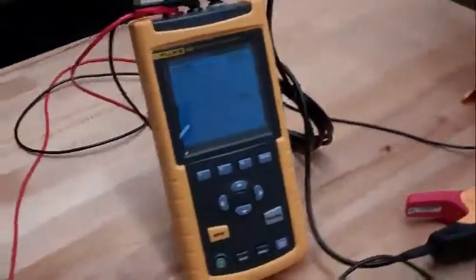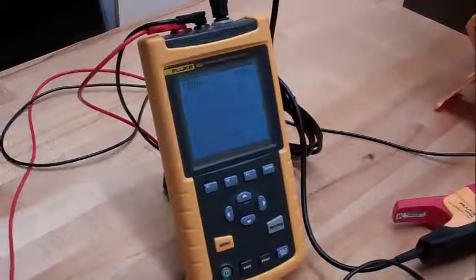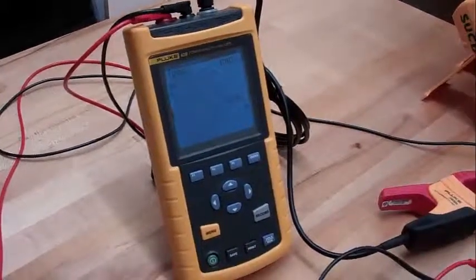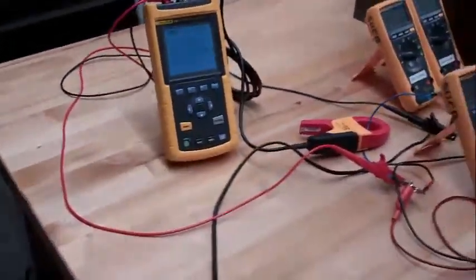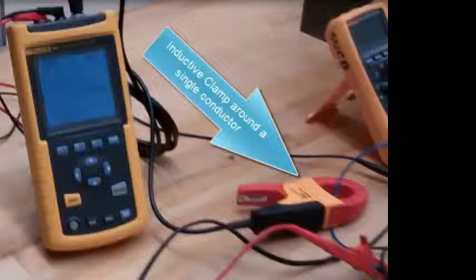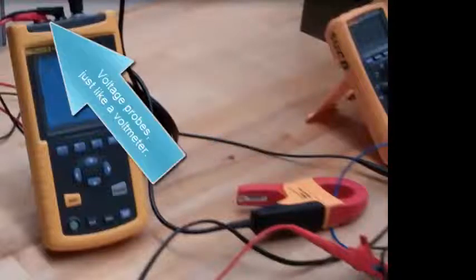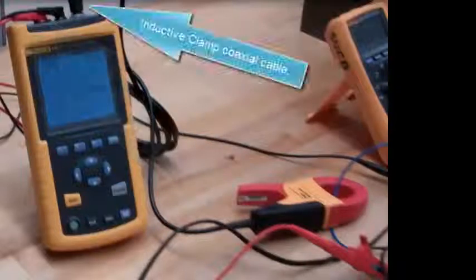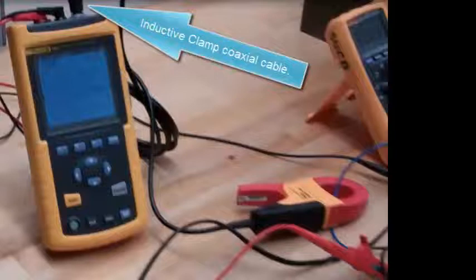That's a power meter. There's the power meter. The inductive clamp around a single conductor. The voltage probes are just like for a voltmeter. The inductive clamp requires a coaxial cable.